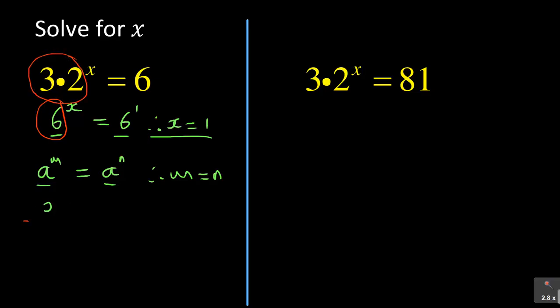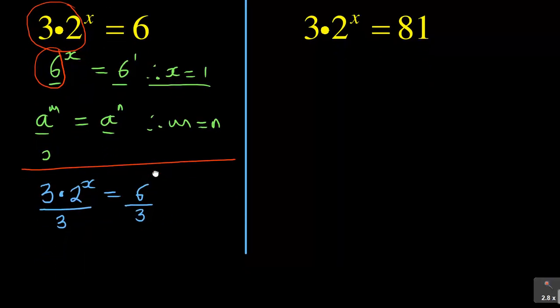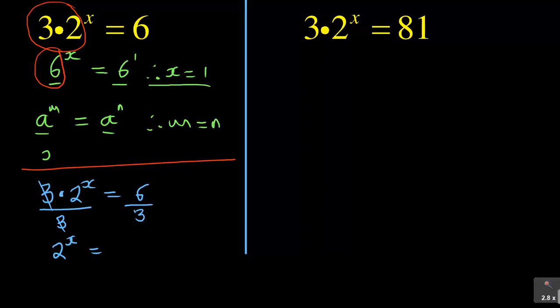Now how do you solve this? The way to solve that is, you are given 3 dot 2 to the exponent X is equal to 6. Now the first thing to do is, since there is a multiplication, that 3, the power X is not affecting that particular 3. Always remember, the power X is only affecting 2. So you need to divide by that 3 because the 3 is not affected. And when you do that, you'll have 2 to the exponent X. Now 6 divided by 3, you get 2. So it is equal to 2 to the exponent 1. Therefore, you use this law also, which says if the bases are the same, so you also equate the exponents. Therefore, X is equal to 1.